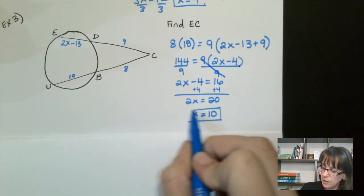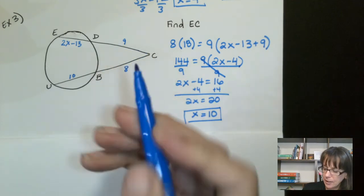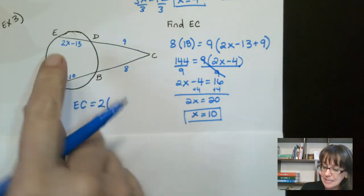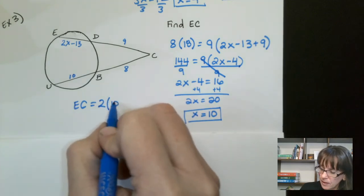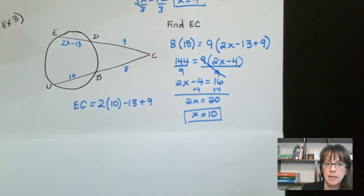Okay. So X equals 10, go back, read the question. It says find EC. EC is this whole bit here. So we're going to say EC equals 2X. And instead of X, we're going to put in 10 minus 13 plus 9. So I did this bit plus this big bit here.